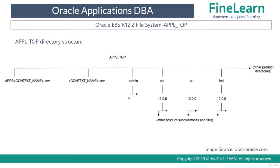APPL_TOP is one of the most important directories in Oracle E-Business Suite. Over a period of time, different directories have been introduced — for example, the FS1 and FS2 file system introduced in EBS 12.2, and INST_TOP released from release 12.0 — but one directory that has always been there since at least 11i is APPL_TOP. So APPL_TOP is one of the most important directories in the entire application tier file system.